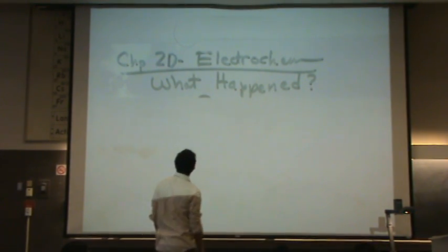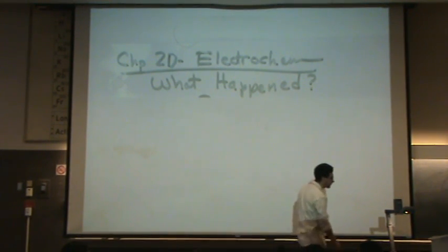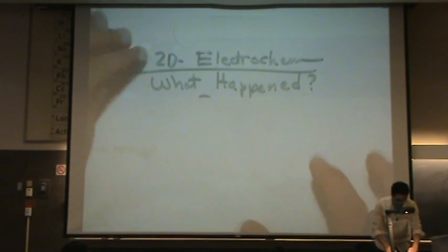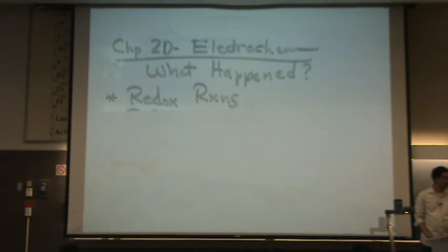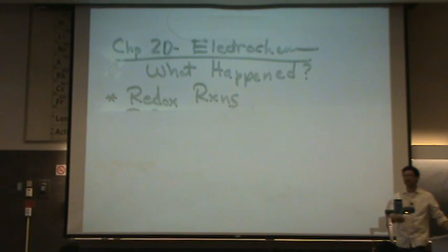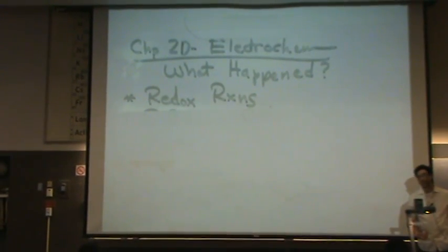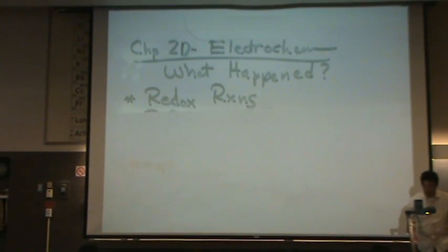Okay, in this chapter summary, what the heck happened in electrochemistry? Well, you better know your redox reactions. Be able to balance them and be able to use the reduction potential table to write down reactions.